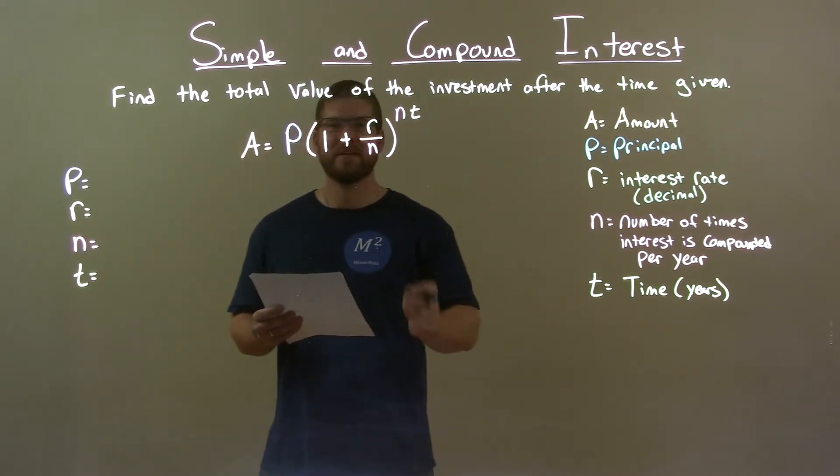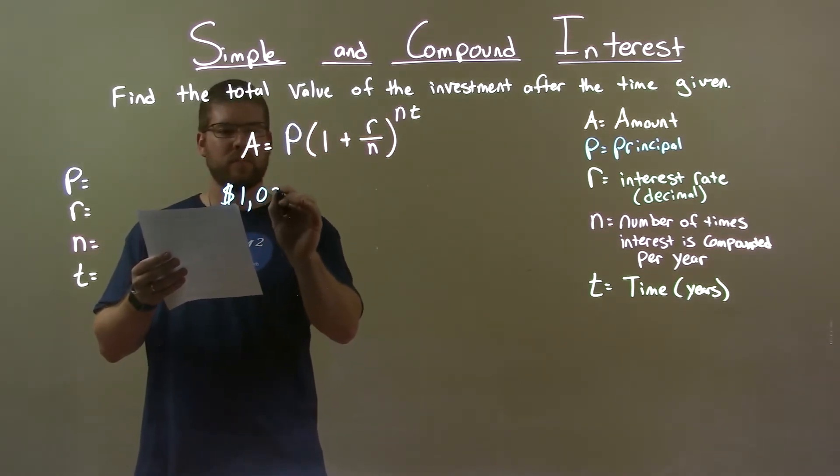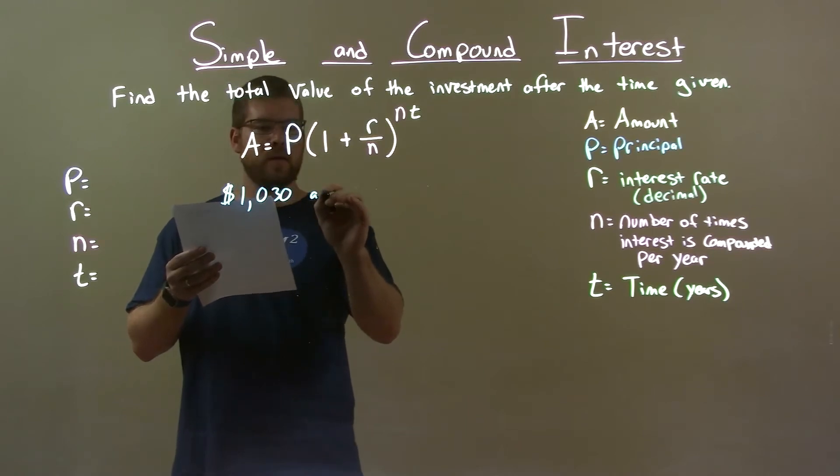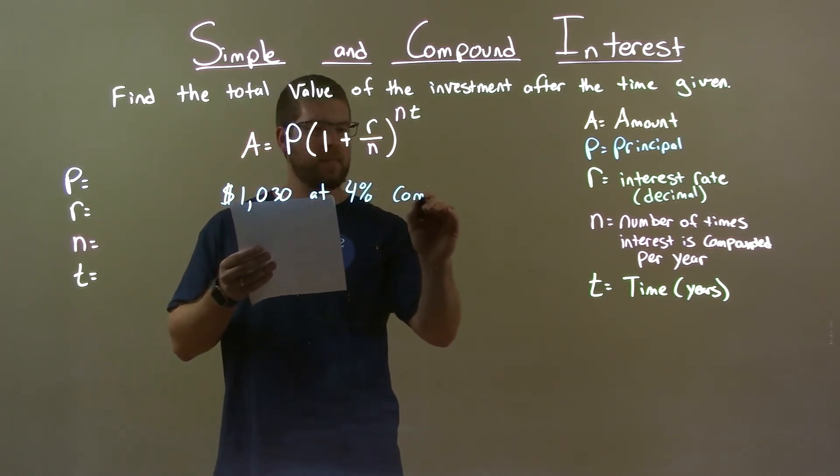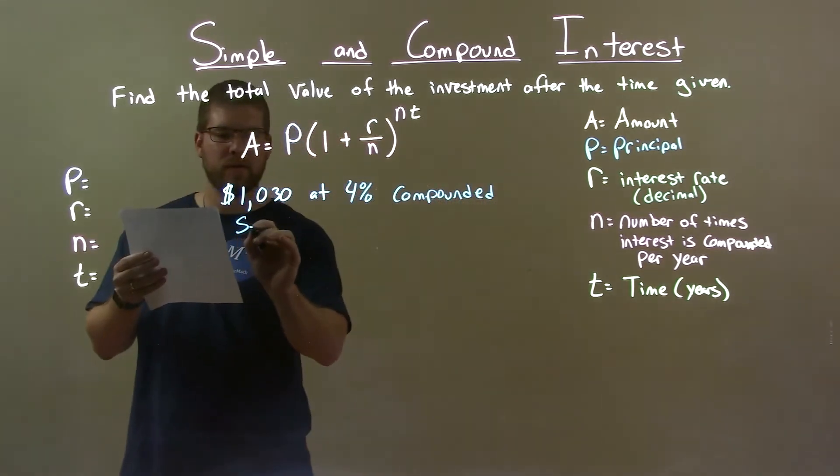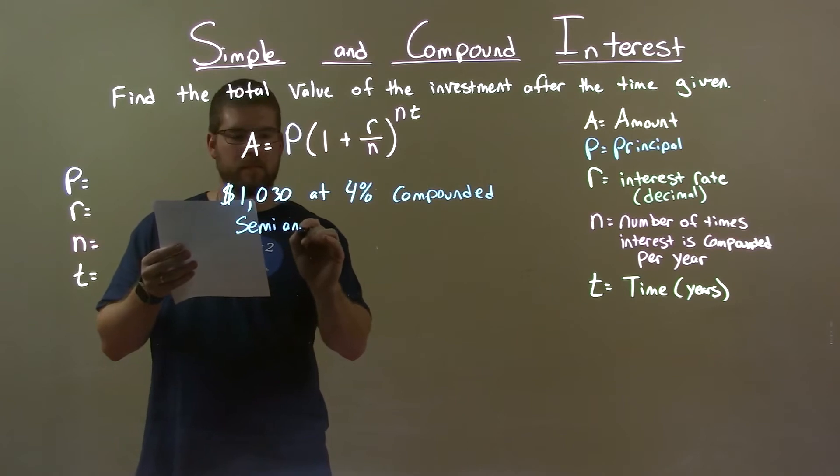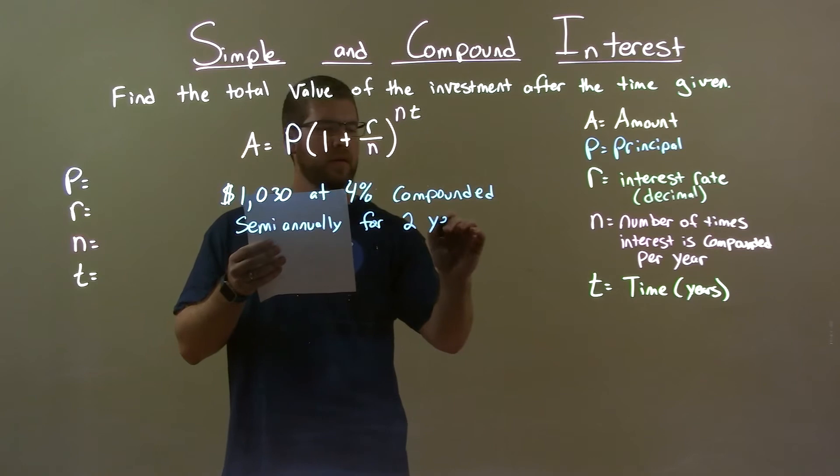If I was given this problem, $1,030 at 4% compounded semi-annually for two years.